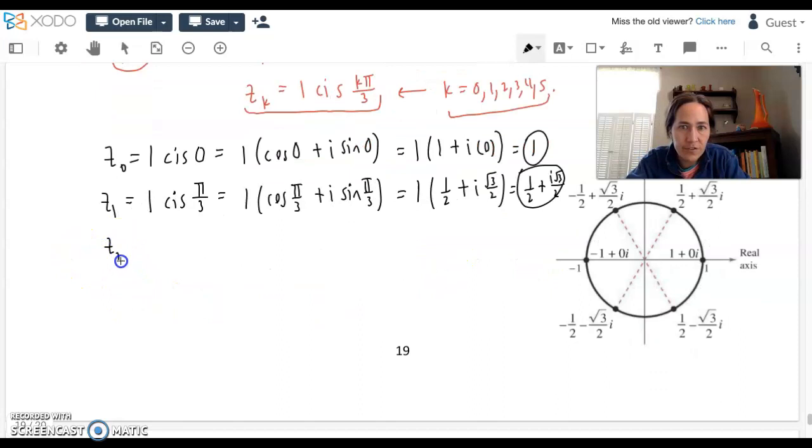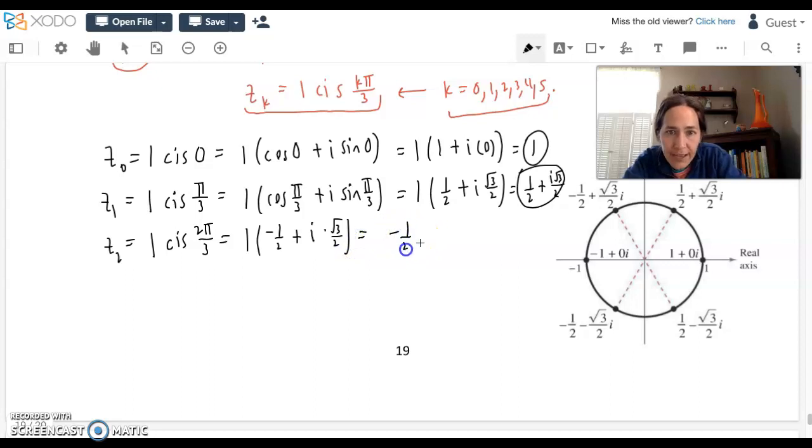We have five left to go. So z sub one, this will be 1 cosine plus i sine and then one π over 3. So just π over 3. Think of it as one cosine of π over 3 plus i times the sine of π over 3. Exact values, we're in quadrant one, π over 3, the cosine should just be a half. A half plus i times the square root of 3 over 2. Third answer, z sub two. Cosine plus i sine, let's do 2π over 3. We'll get negative a half plus i times the sine of 2π over 3. So next answer is negative a half plus i square root of 3 over 2.